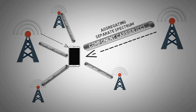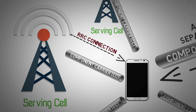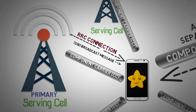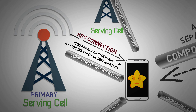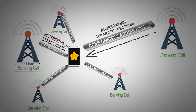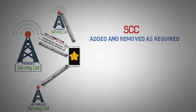In LTE Advanced CA, each component carrier used for data transmission is also referred to as a serving cell. In carrier aggregation, we have multiple serving cells, but RRC connection will always be handled by the primary serving cell. In idle mode, the UE listens to system information block broadcast messages through the primary serving cell and sends uplink control information through its uplink control channel. Basically, all signaling messages are handled by PCC. The other component carriers are referred to as secondary component carriers or SCC. Unlike PCC, there can be multiple SCCs, which are added and removed as required, while the PCC is only changed at handover.